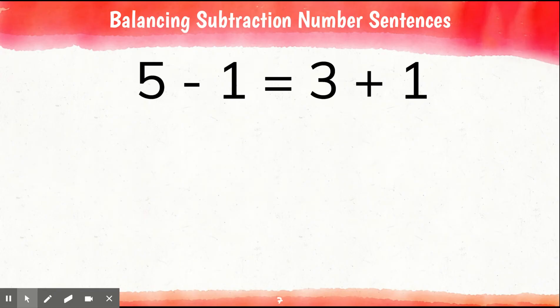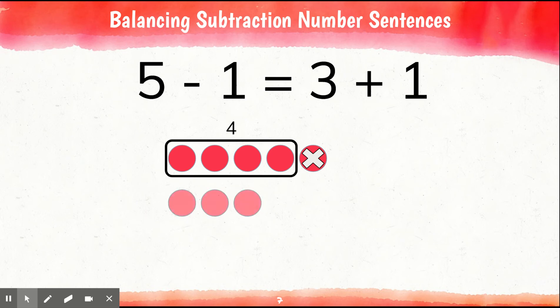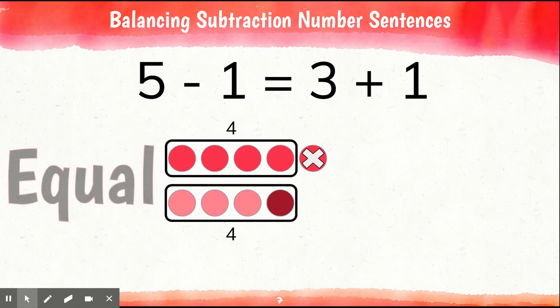All right, let's do another one. We have 5 minus 1 is equal to 3 plus 1. Go ahead and make a prediction — do you think this is equal or unequal? Let's see if you're correct. Here we have 5 counters. We're going to take away 1. That leaves us with 4 left. Then we have 3 counters and we're going to add 1 more. That is also 4. This is an equal equation. So if you said equal, you're correct again.